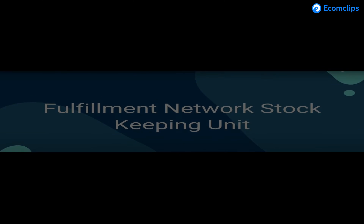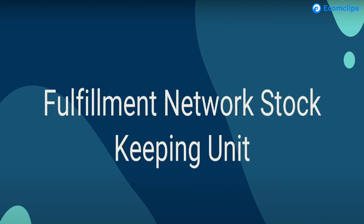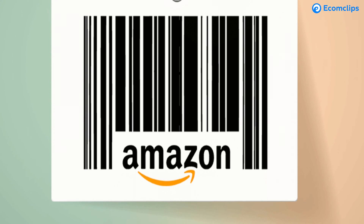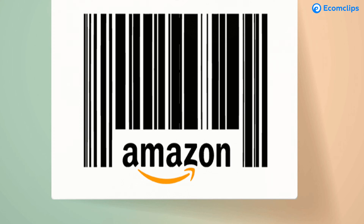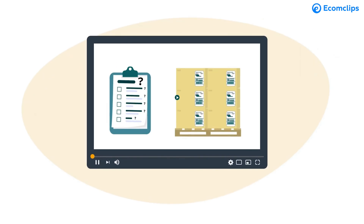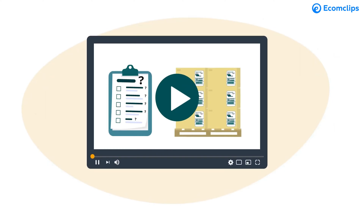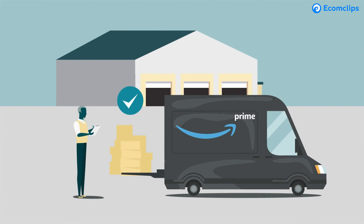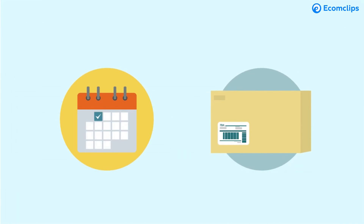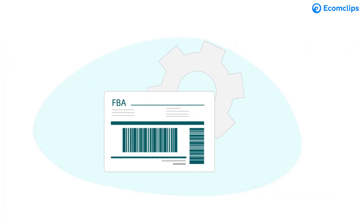The first question that arises by hearing the term FNSKU is: what is FNSKU? FNSKU stands for Fulfillment Network Stockkeeping Unit, and this is an Amazon-specific barcode used by FBA sellers. Amazon uses the FNSKU to identify a seller's product and connect them to your Amazon seller account. The FNSKU number is used by all Amazon Fulfillment Centers to identify products, and it is exclusive to products that are fulfilled by Amazon FBA.